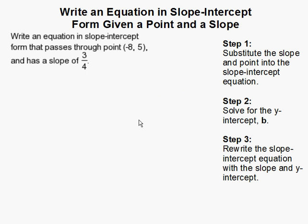Write an equation in slope-intercept form given a point and a slope. In this problem we are going to write the equation in slope-intercept form given the point negative 8 comma 5 and the slope of 3 fourths.